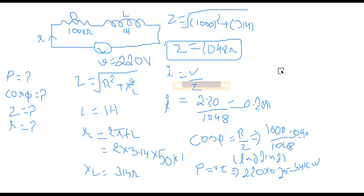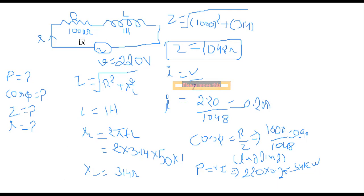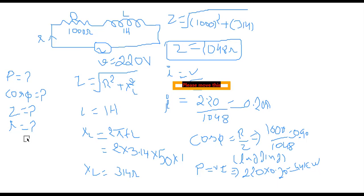Before performing the experiment, we go to the calculation part first. This is our RL series circuit — we call it RL series because resistor and inductor are both connected in series. In this calculation part, we take a supply voltage of 220 volts, resistance of 1000 ohms, and an inductor of 1 henry. We must calculate the power factor, impedance, and current of the circuit.